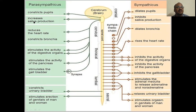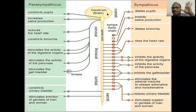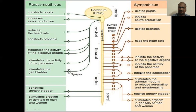Constricts the pupils, increases saliva production, reduces the heartbeat, constricts the bronchi — all are very easy to remember. All these things you have to write in the examination. That's why this is also called craniosacral. Craniosacral — this is the cranium, the brain. So your brain will work well in meditation. And the sympathetic system is thoracolumbar. Dilates the pupils, inhibits saliva production, dilates the bronchi, raises the heartbeat.